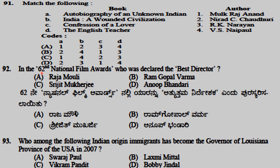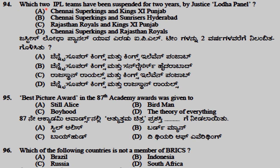In the 62nd National Film Award, Srijit Mukherjee was declared the best director. Bobby Jindal, of Indian origin, became the governor of Louisiana province of USA in 2007. The two IPL teams suspended for two years by the Justice Lodha Panel were Chennai Super Kings and Rajasthan Royals.